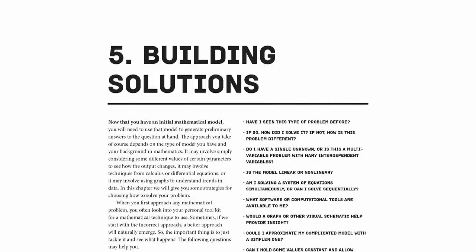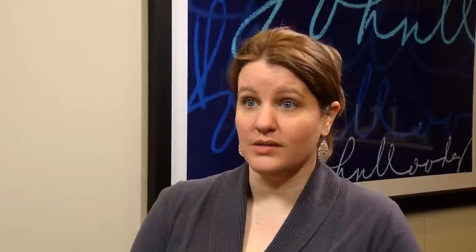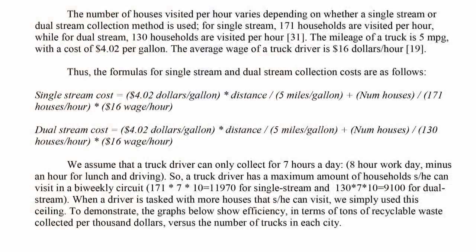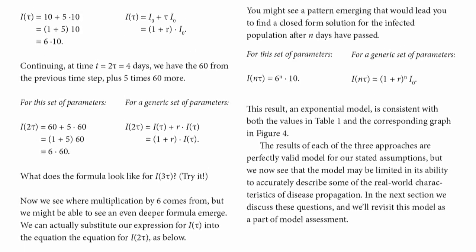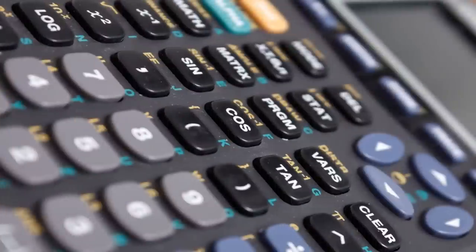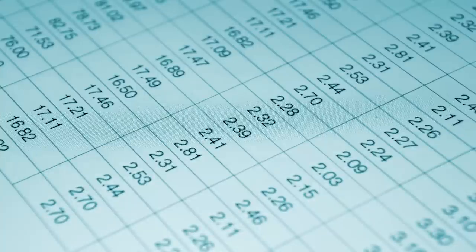Once the question, assumptions, and variables are in place, the next step is to build a solution using the mathematical skills and tools at your disposal. You do some research, put together more assumptions, and get down to equations — this variable is related to that variable by this sort of equation. Once you have a set of equations, inputs, and outputs, you figure out how to solve them. If you do calculations by hand, that's great. If you have more sophisticated tools, you can use Excel or open-source programming languages to solve differential equations or anything like that.